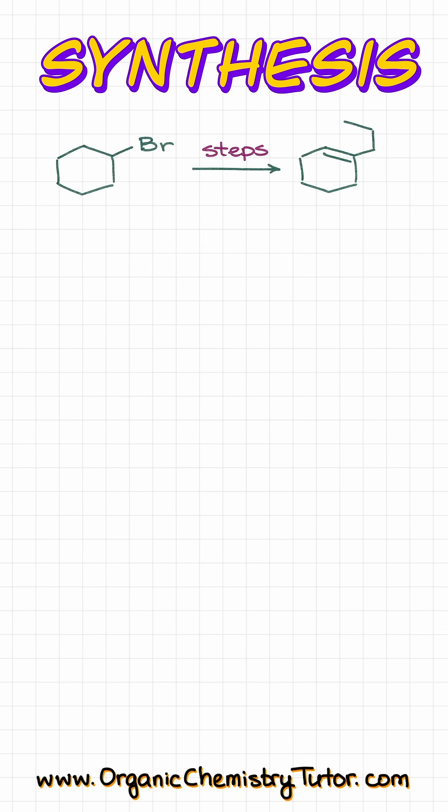Well, let's use the retrosynthetic analysis. First of all, we have our double bond. We normally create double bonds via the elimination reaction, which means that the predecessor for that elimination reaction should look something like that, where X is some sort of a leaving group.